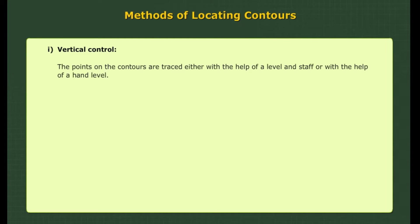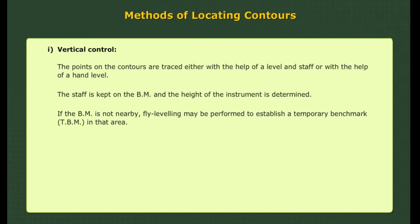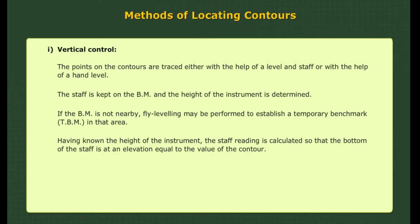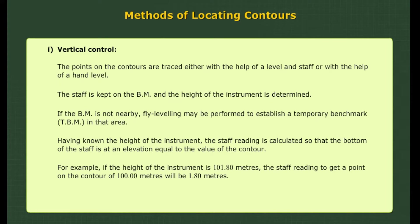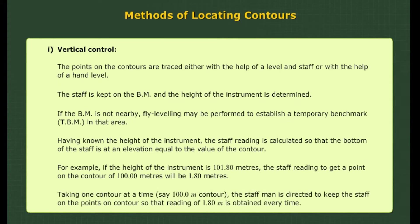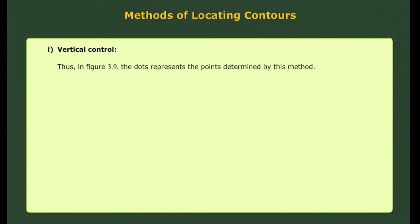Vertical control. The points on the contours are traced either with the help of a level and staff, or with the help of a hand level. The staff is kept on the BM and height of the instrument is determined. If the BM is not nearby, fly levelling may be performed to establish a temporary benchmark (TBM). Having known the height of the instrument, the staff reading is calculated so that the bottom of the staff is at an elevation equal to the value of the contour. For example, if the height of the instrument is 101.80 metres, the staff reading to get a point on the 100.00 metre contour will be 1.80 metres. The staff man is directed to keep the staff on points on the contour so that the reading of 1.80 metres is obtained every time.